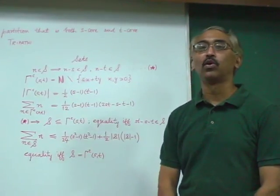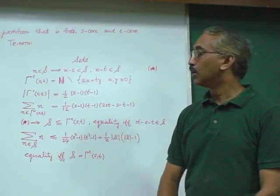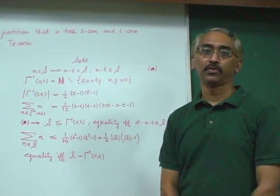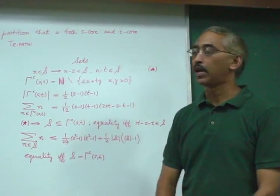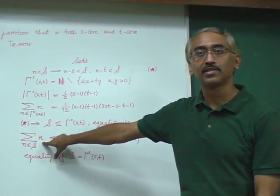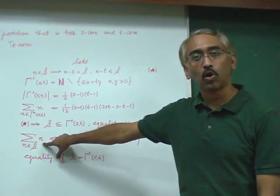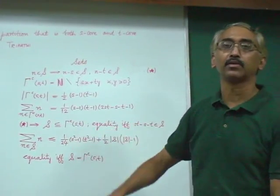Then, to show this inequality for any S, we simply remove from gamma complement the numbers that come in so as to get S, and show that results in a decrease here on the left by a quantity that is more than the decrease on the right.